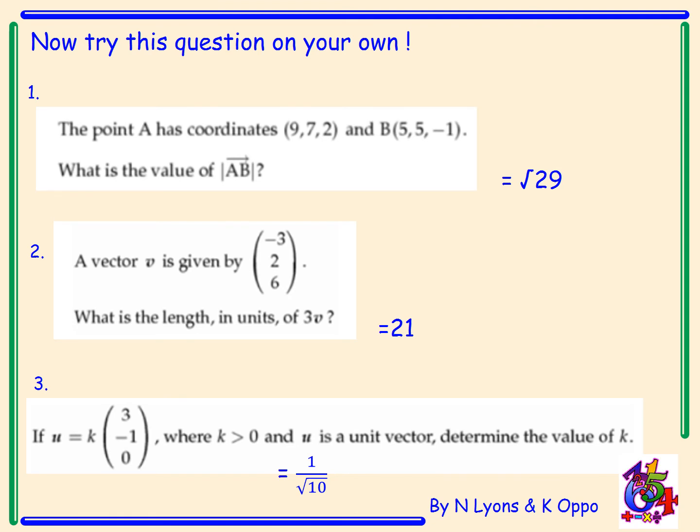For question 2, a vector V is given by the components minus 3, 2, 6. The question was, what is the length in units of 3V? So again you've got to work out what is the vector 3V by multiplying each component by 3, and then finding the magnitude. The magnitude equals 21.